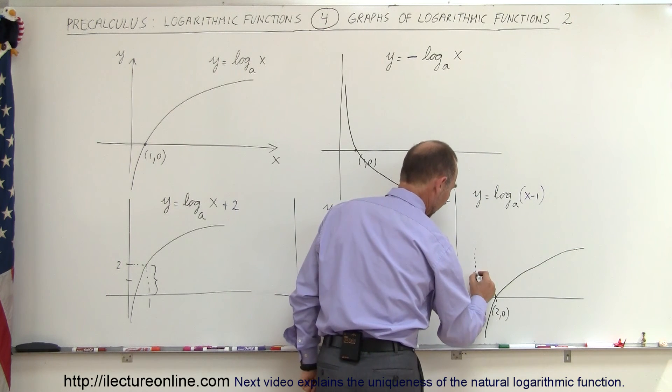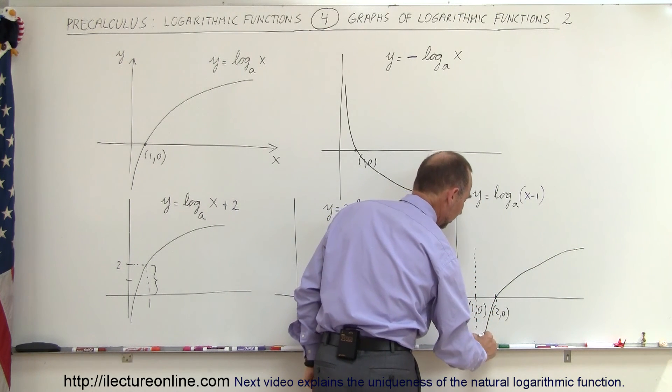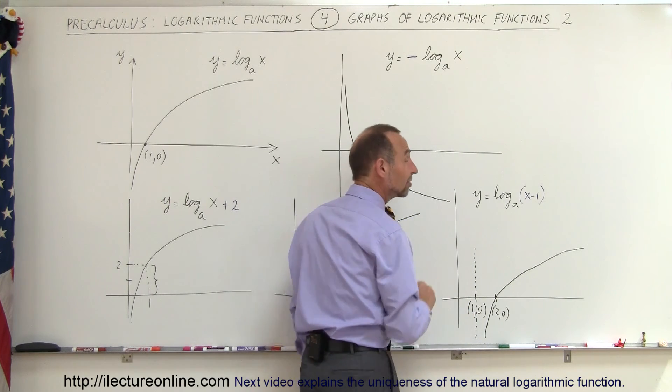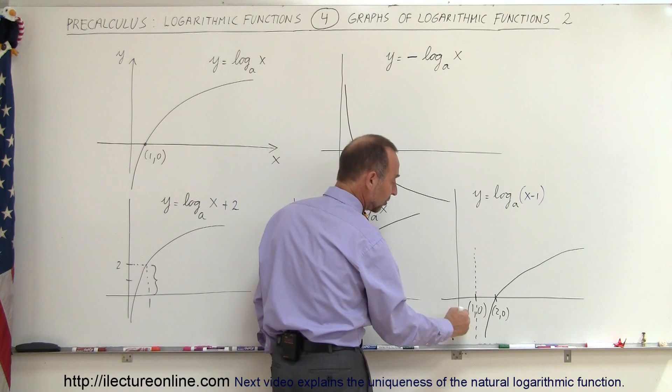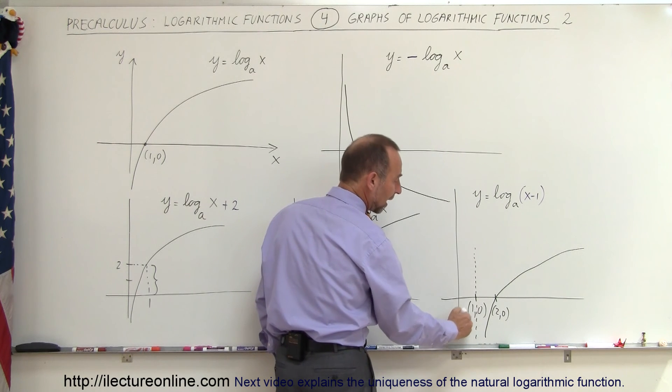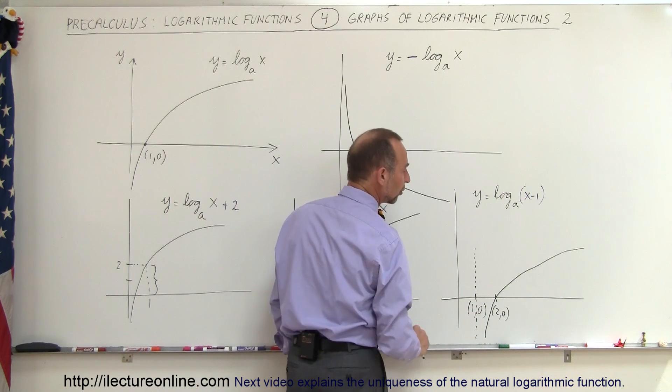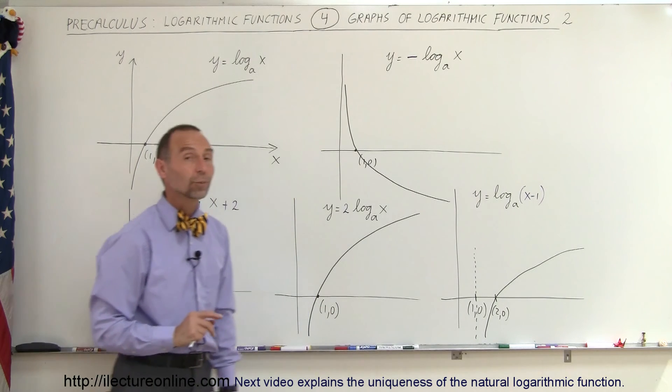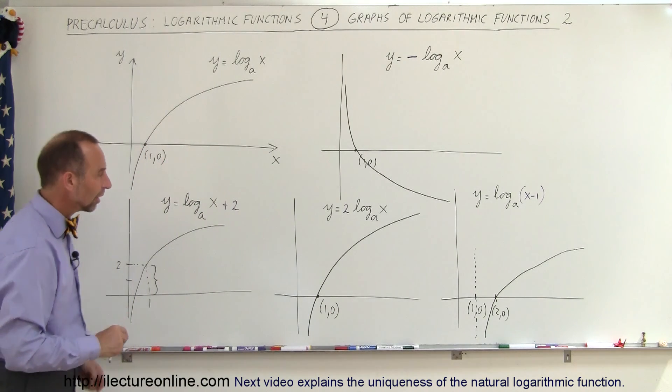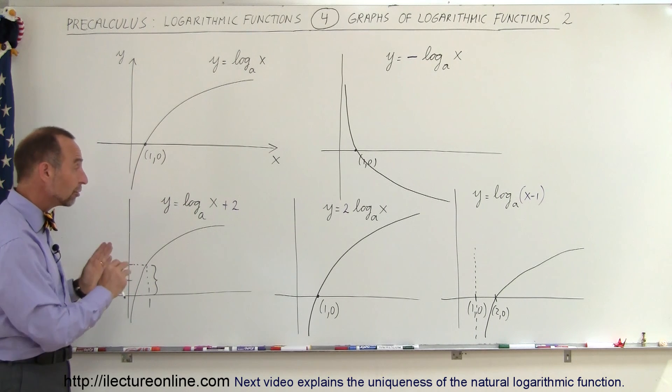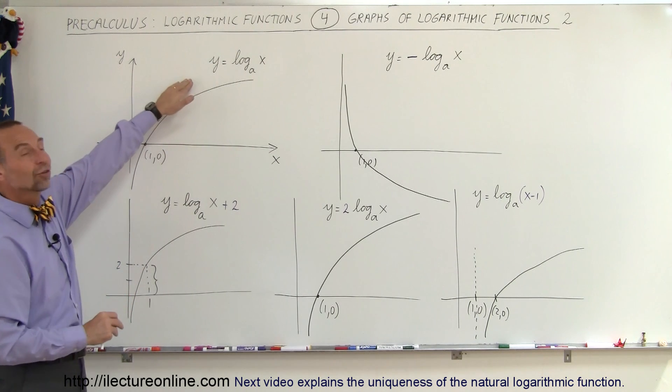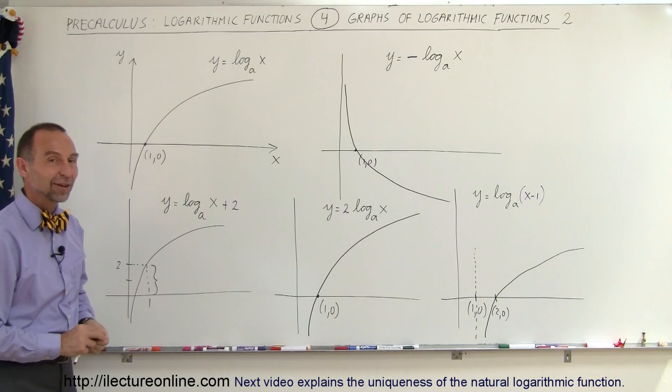And it will asymptotically reach the line x equals 1 instead of the line x equals 0. So instead of asymptotically reaching the y-axis, it will asymptotically reach the line x equals 1, one unit to the right. And those are the differences between those various graphs. So that gives you an idea of how to graph logarithmic functions when things are not quite the standard format. And that's how it's done.